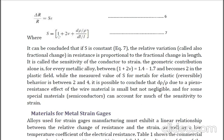One plus two mu contributes much more of the sensitivity for most metals. Whereas for semiconductors, the component representing change in resistivity over resistivity divided by length over L makes up the bulk of the sensitivity. Remember, sensitivities of almost 100 to 170 are observed for different types of semiconductor strain gauges. This term is called the piezo-resistive effect, meaning they are very sensitive to change in resistance with respect to any form of applied or external loading.